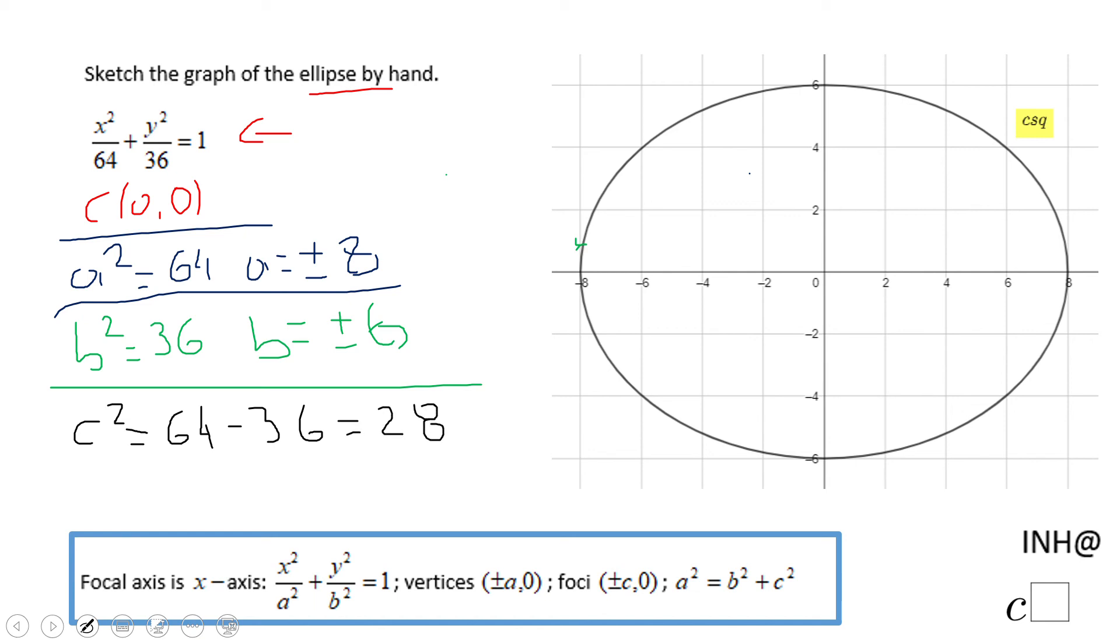64 minus 36 is 28. So c will be plus or minus square root of 28, which is what? 2 square root of 7, right? So that tells us where the foci are.